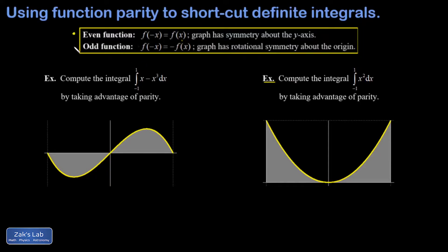An odd function has the property that f of negative x equals negative f of x, and it ends up with a rotational symmetry about the origin. Our first example is the example of the odd function.